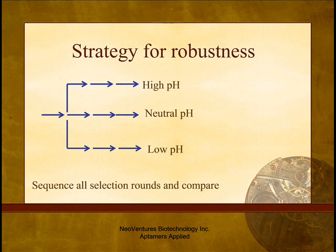Another opportunity for branch strategies is an exploration of the robustness of sequences under the various conditions that may be experienced in a diagnostic environment. We can select under different conditions — pH, temperature, buffer components, and different matrices — and determine which sequences will be the most robust even before we start performing binding assays. We are looking for those motifs that maintain their trajectories over selection rounds across all selection conditions. These may not be the best aptamers for each individual condition, but the aptamers that will work best across all conditions.